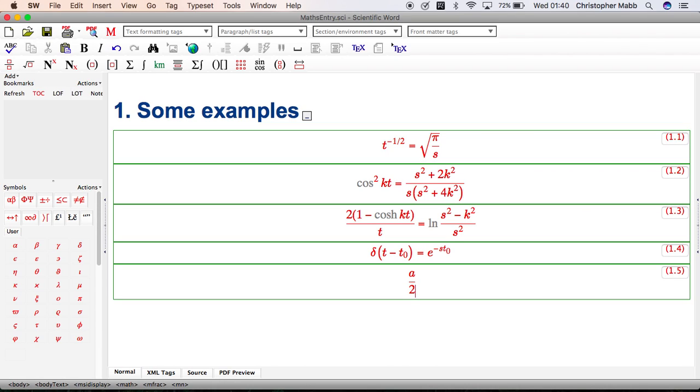Square root of pi t cubed. Point and click at the square root, pi from the Greek letters bottom left, t cubed.